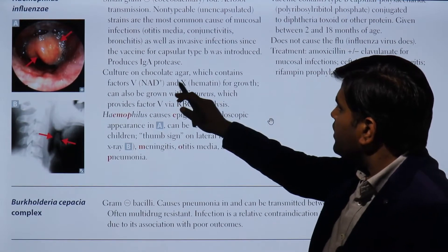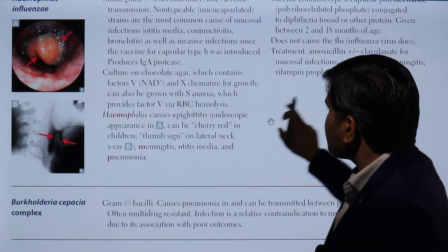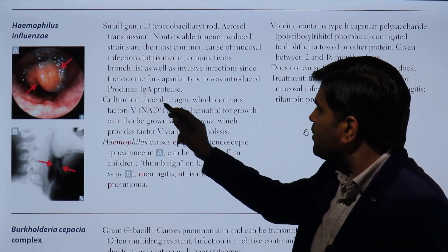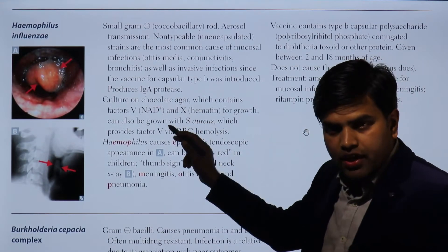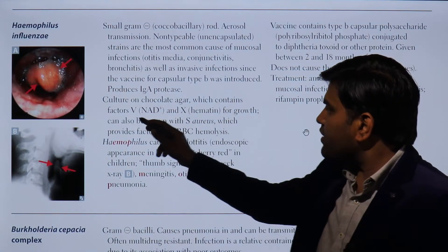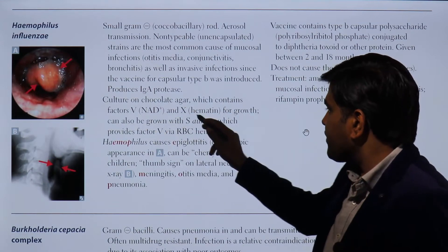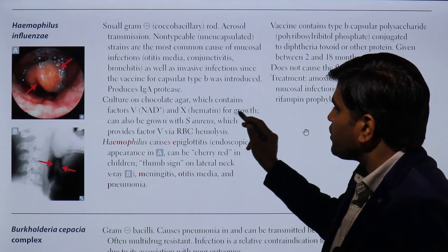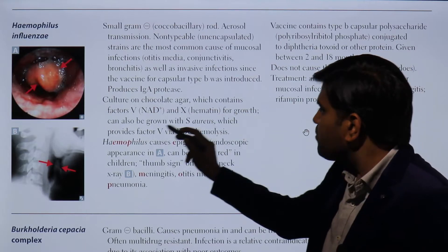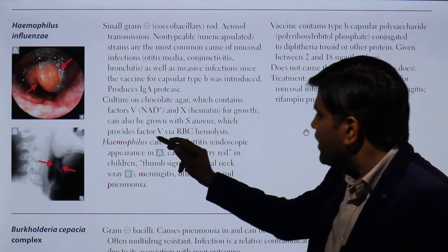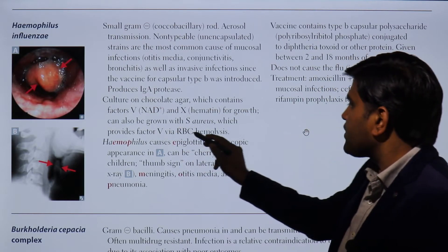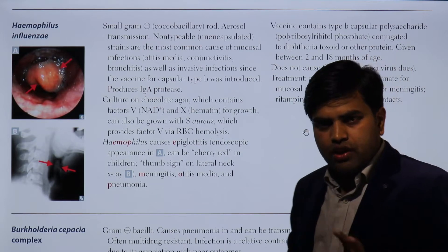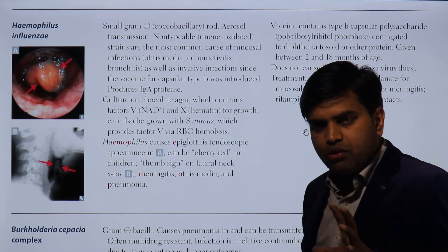Moving forward, regarding culture: this organism can be cultured on chocolate agar, which contains Factor V and Factor X — that is, NAD and hemin — required for growth. It can also be grown with Staph aureus, which provides the V factor via RBC hemolysis.